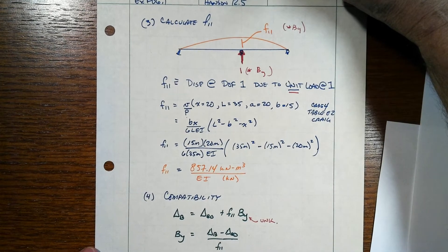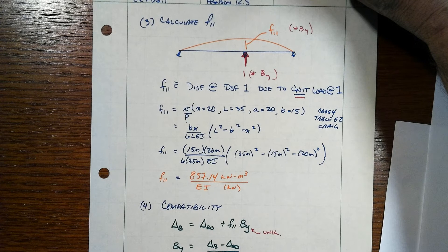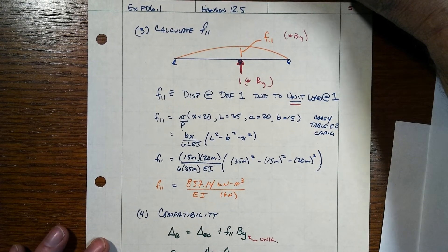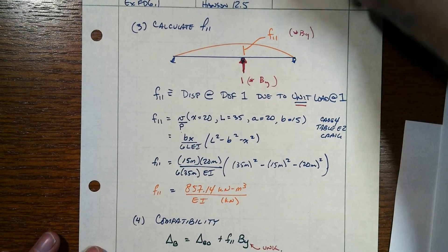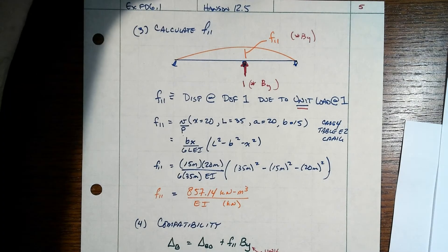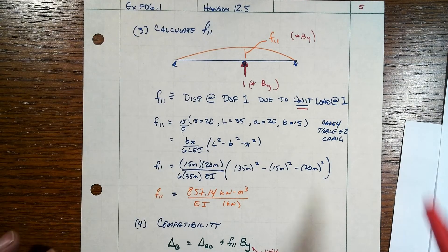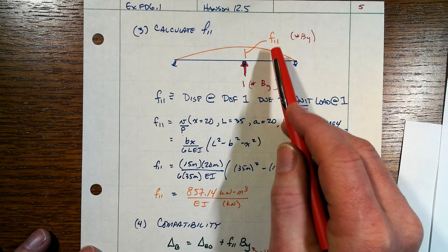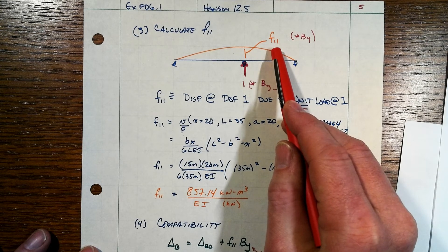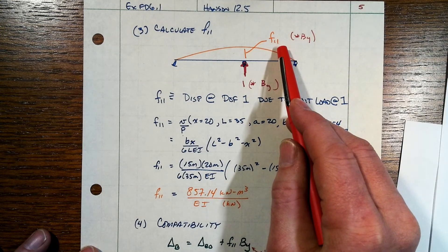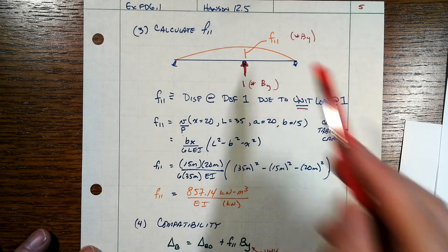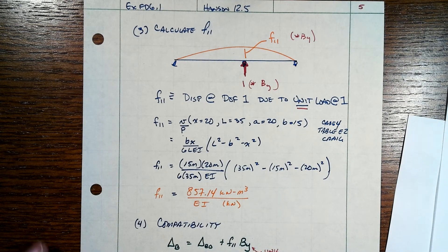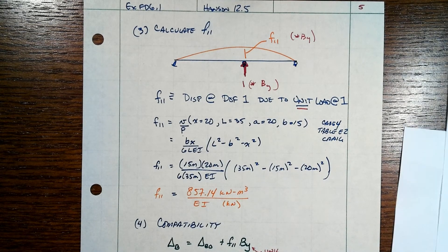In this next part, we're going to calculate what the displacement is that is related to the redundant reaction. That's going to be the flexibility coefficient — the displacement at 1 due to the unit load being placed at 1. And then we're going to scale all that up by the unknown but actual value of Vy.